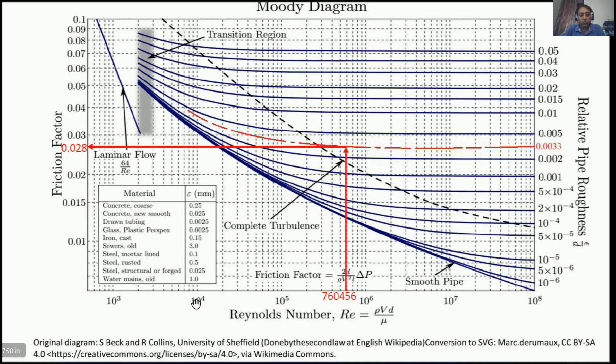See, this is 10,000, this is 1 lakh (100,000), and this is 10 lakh (1,000,000). So 760,456 is somewhere over here, between 1 lakh and 10 lakh. We have to predict it wisely. So Reynolds number we have found.